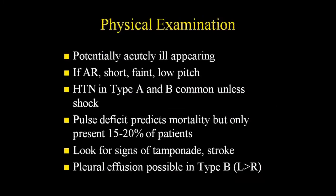On exam, patients can look ill-appearing. Aortic regurgitation is not always obvious. Hypertension is very common, especially in Type B, unless they're in shock from a leak. Pulse deficit is an important prognostic marker — it tells you the flap has dissected down past the subclavian, meaning it's gone a long way — but again it's not present in most patients.